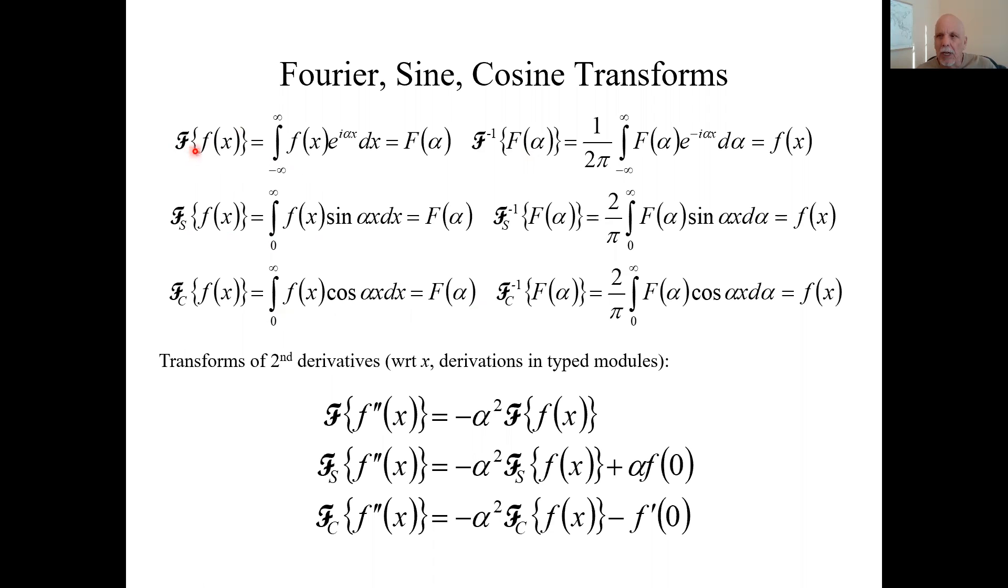If you took the Fourier transform of f prime, the derivative of f with respect to x, you would put that in this formula here, put in f prime here instead of f of x, and do the integration by parts. And if you did it again, you would come up with this formula for the Fourier transform of the second derivative. You just multiply the Fourier transform of the function itself by minus alpha squared.